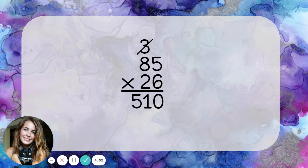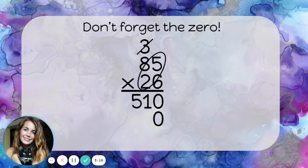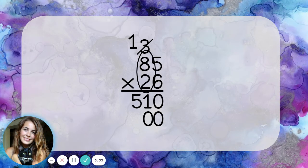Let's move on to multiplying eighty-five times two. But remember, before we do that, we need to add that zero to the ones place of our second number, because the two is not actually a two — it's a twenty. Now, because we have the zero, we can treat it like a two and just multiply eighty-five times two. I would multiply two times five — that's ten. I can't put a ten in the ones place, so I'll put down the zero and carry the one. Now I need to multiply two times eight — that's sixteen, but don't forget to add one more to it — that's seventeen.